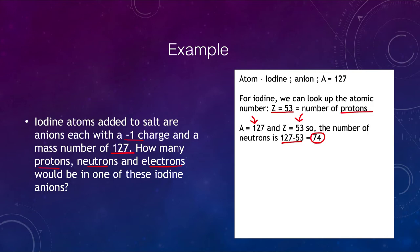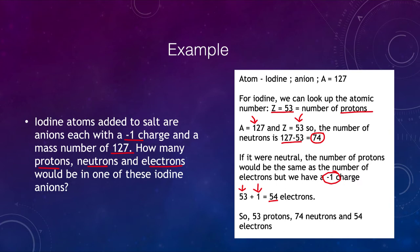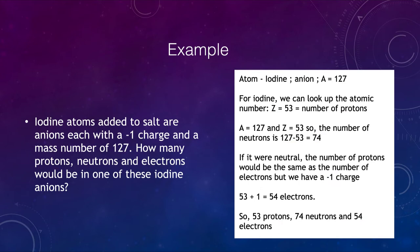Now we just need to figure out the number of electrons. If this were neutral, the number of protons would equal the number of electrons. But we have a minus one charge, so we have one extra electron. Instead of the 53 that would match the number of protons, we need one extra, giving us 54 electrons. So our final answers are: 53 protons, 74 neutrons, and 54 electrons in this iodine anion. That's how we can calculate the number of protons, neutrons, and electrons given basic information about the material.